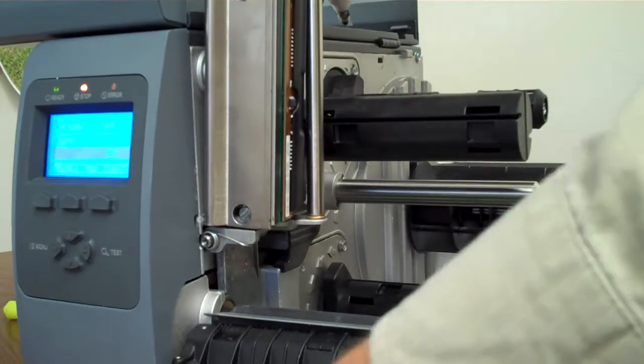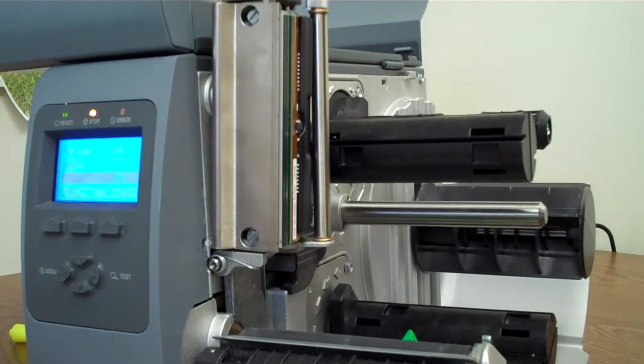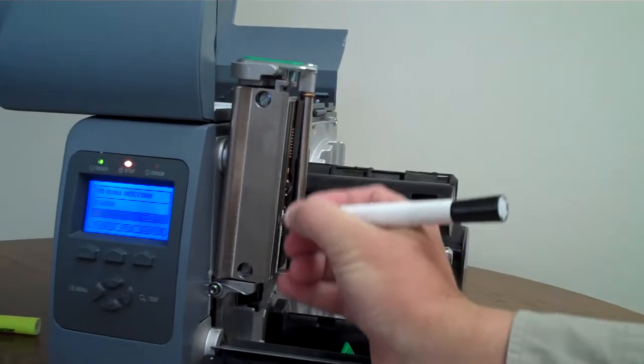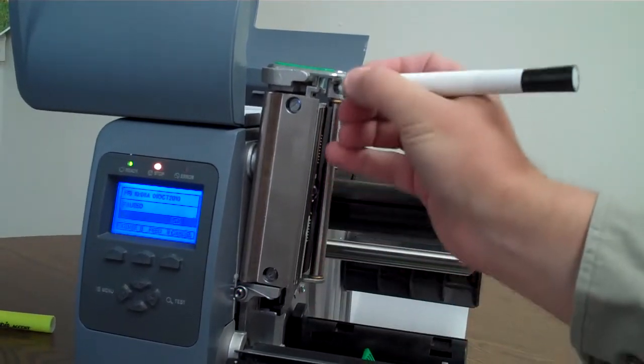We know that a clean printhead leads to better quality printed barcodes. The Datamax M4308 is the only printer whose printhead mechanism can go all the way up, allowing for super easy cleaning.